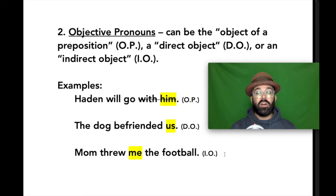Or how about the dog befriended us. In this instance, us is behaving as a pronoun and a direct object, the thing that was befriended by the dog. Dog is the subject. Befriended is what the dog did, the verb. And who was befriended? Us. Once again, us is from the objective pronoun list. And us is the direct object in this sentence.